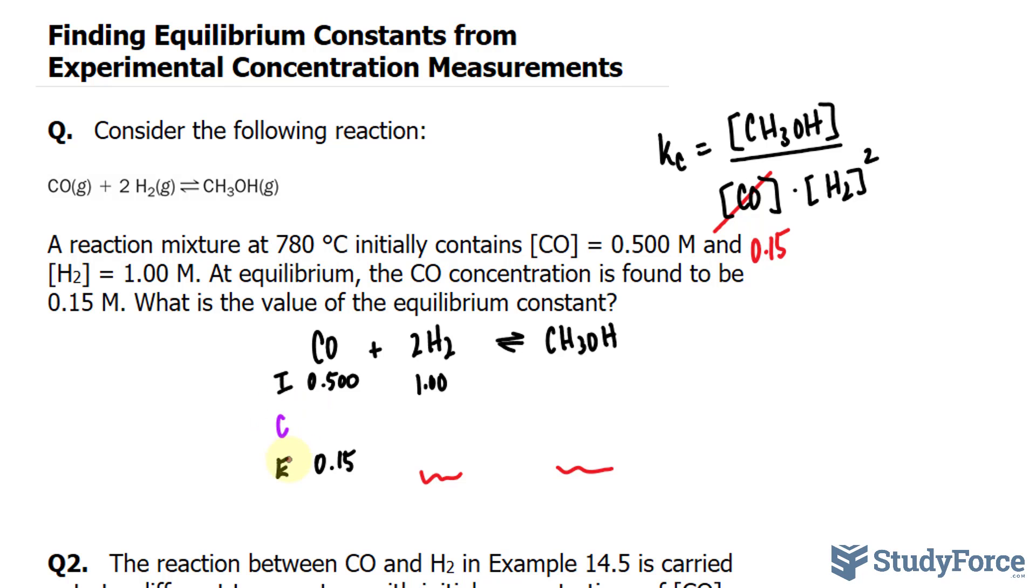First, we need to find the change, and we can do that by writing that the change equals the equilibrium minus the initial. The equilibrium is 0.15 minus 0.50, which gives us negative 0.35.